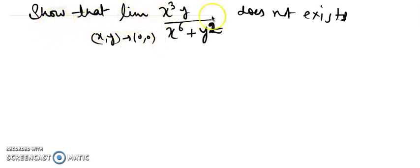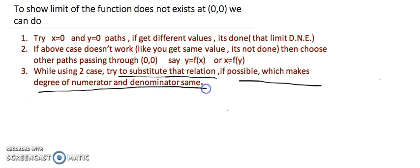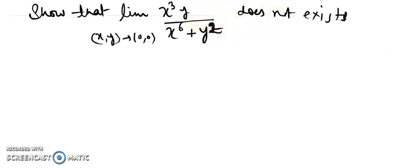Now let's take another example where we want to show the limit does not exist. Starting from x = 0 or y = 0 will give 0, as we've seen. The key strategy: while using substitution, try to find a relation between y and x — a curve passing through the origin — that makes the degree of numerator and denominator equal. This lets you target the answer in one step.